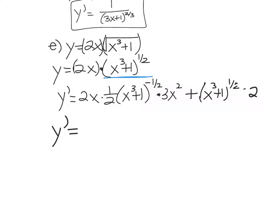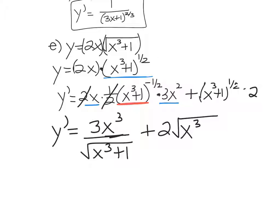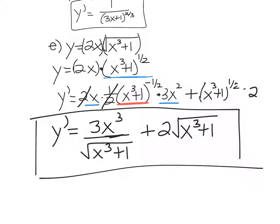So y prime equals the 2 and the 1 half cancel out. I have an x and then a 3x squared. Let's put those together as 3x cubed. And I'm going to take this thing right here to the negative 1 half and I'm going to move it down to the bottom. Did I do something wrong? Because I mess up all the time. So if you see something, let me know. And then this square root right here has to drop down to the bottom. It becomes the square root of x cubed plus 1. And then over here we get plus 2 times the square root of x cubed plus 1. You don't need to rationalize this. Whenever you're radical, it's fine. Just leave it. But that would be the derivative.